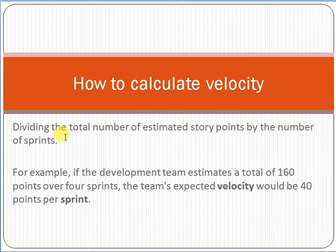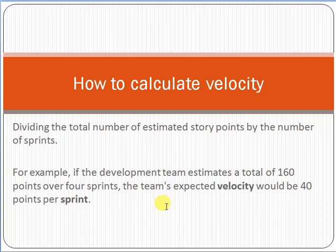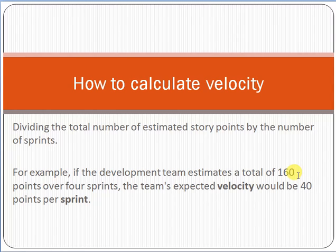Coming back to the topic — we calculate velocity by dividing the total number of estimated story points by the number of sprints. For example, if the development team estimates a total of 160 points over four sprints, the team's expected velocity would be 40 points per sprint — that is, 160 divided by 4 equals 40 points per sprint. This means the team must deliver 40 points in each sprint to achieve the required 160 points. Velocity is simply a rate of work you have to deliver in each sprint.